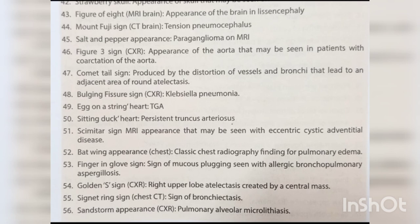Figure-of-8 MRI brain appearance — lissencephaly. Mount Fuji sign on CT brain — tension pneumocephalus. Salt and pepper appearance — paraganglioma on MRI. Figure-3 sign on chest X-ray — may be seen in patients with coarctation of the aorta. Comet tail sign — produced by distortion of vessels and bronchi leading to adjacent round atelectasis.